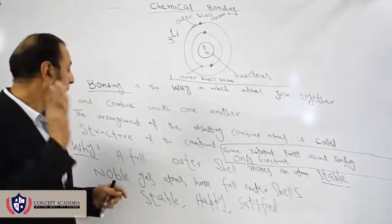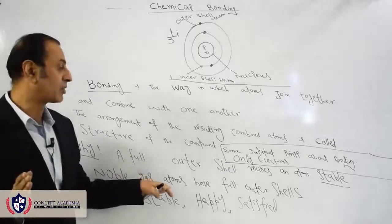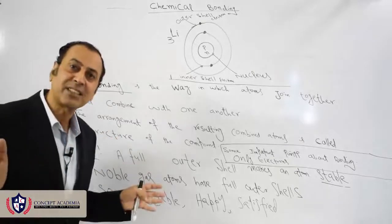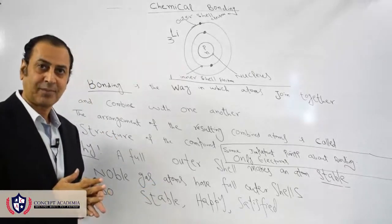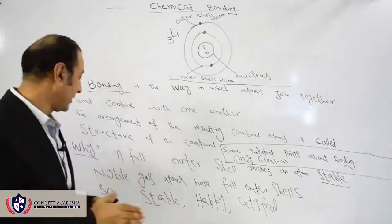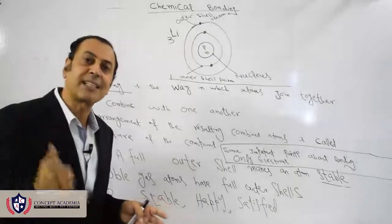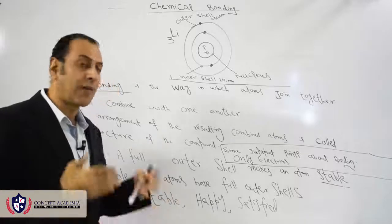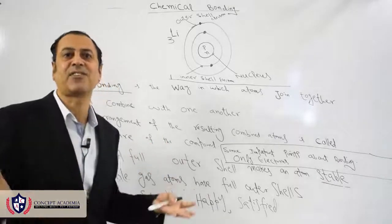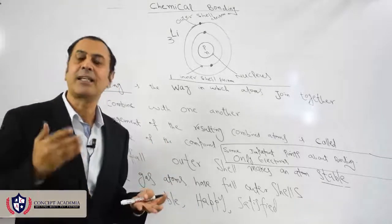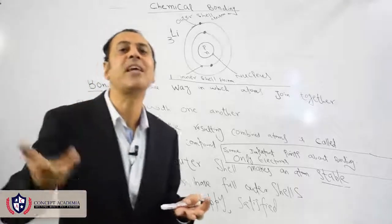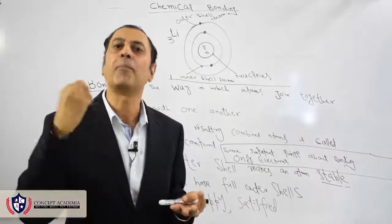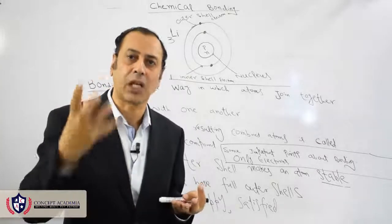The noble gases' atoms have full outer shells, complete outer shells. This is the reason that the noble gases are stable - they are happy and satisfied, and they want to maintain this state of complete outermost shell.